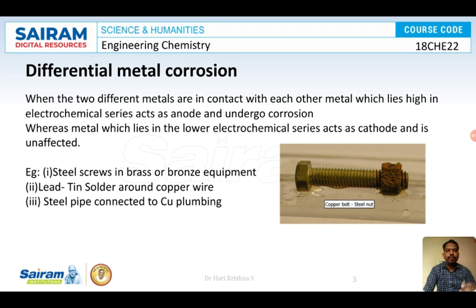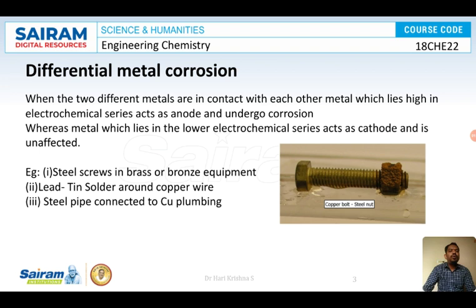As the name indicates, differential metal corrosion occurs when two different metals are in contact with each other. The metal which lies higher in the electrochemical series acts as cathode and is unaffected. The metal which lies lower in the electrochemical series acts as anode and undergoes oxidation — this oxidation is what we call corrosion. The metal acting as cathode is unaffected and is protected.